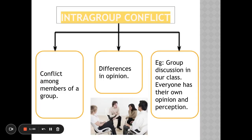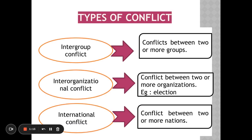Next, intragroup conflict — it is a conflict among members of a group. Like when you're in school doing group work and you don't agree on different things with your group. That is intragroup conflict. Differences of opinion happen all the time in group discussions in class, since everyone has their own opinion and perception.